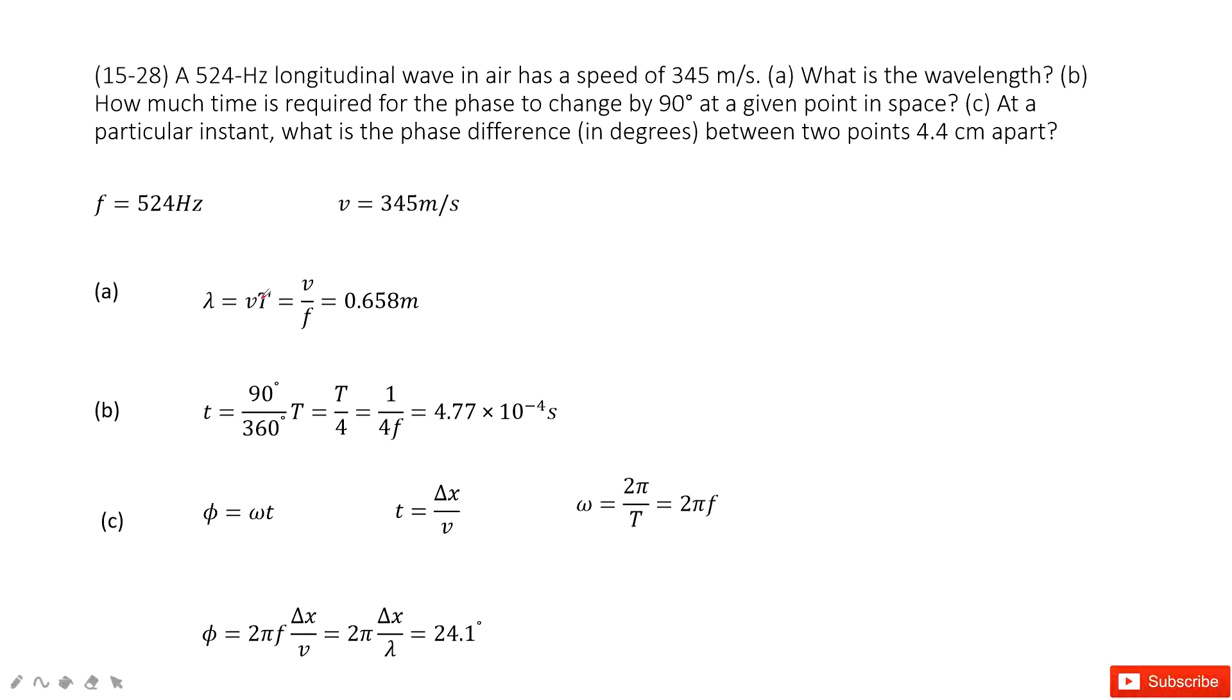So use the speed times the period. And period is 1 over frequency, 1 over f. So we can get the wavelength as v over f. Input v and f inside to get the answer.